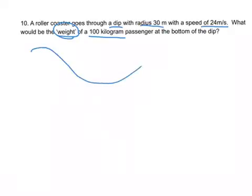So here's my dip. Draw my roller coaster car here at the bottom. There's a little passenger in there. And the radius of this thing is 30 meters.